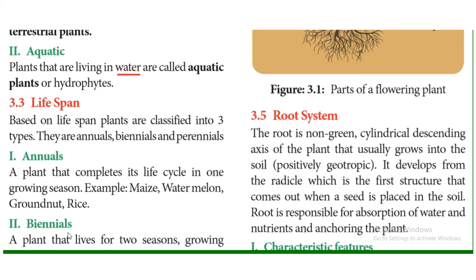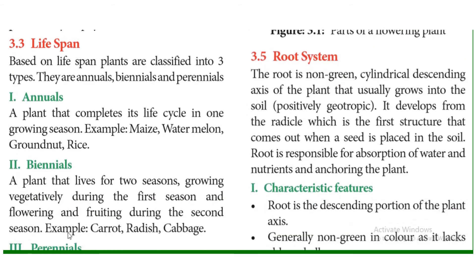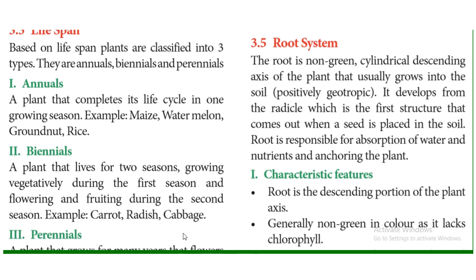Biennials are plants that live for two seasons. In the first season, they grow vegetatively. In the second season, they undergo reproductive growth — flowering and fruiting. Examples include carrot, radish, and cabbage.